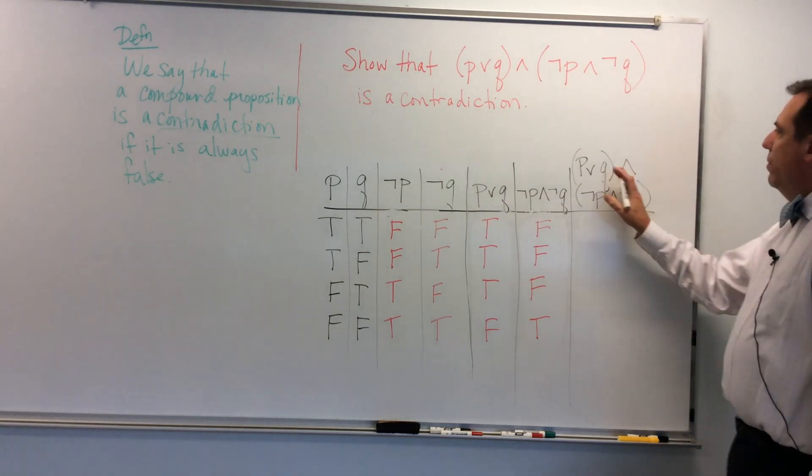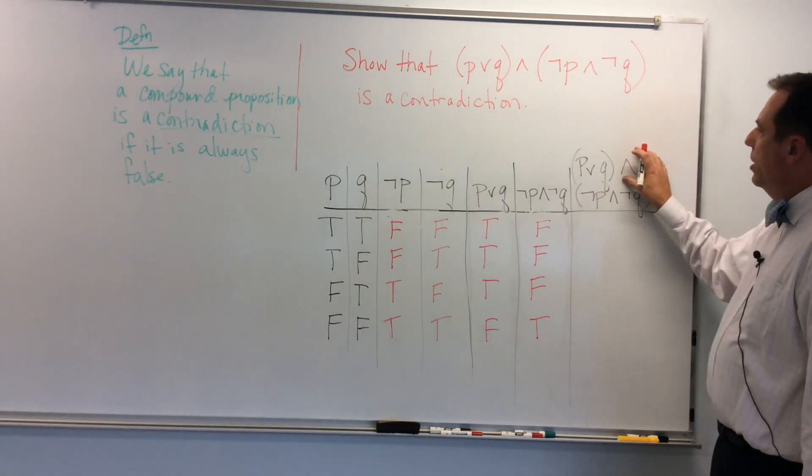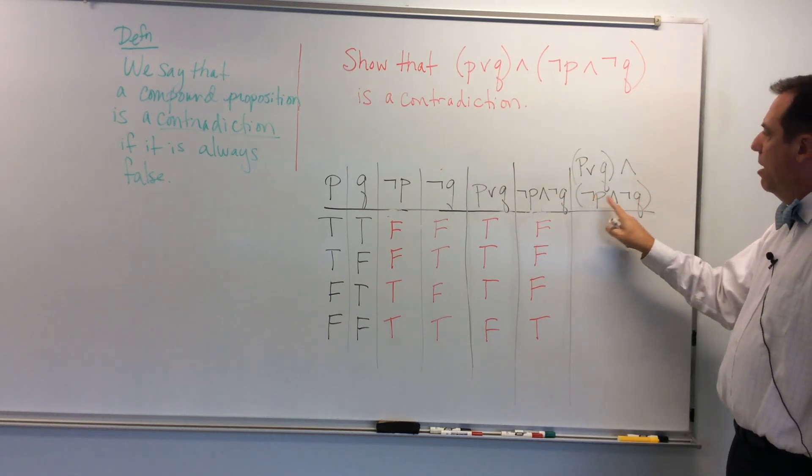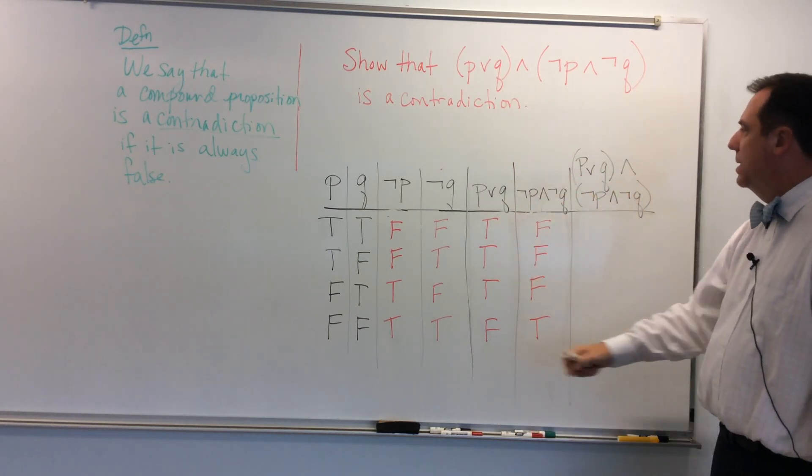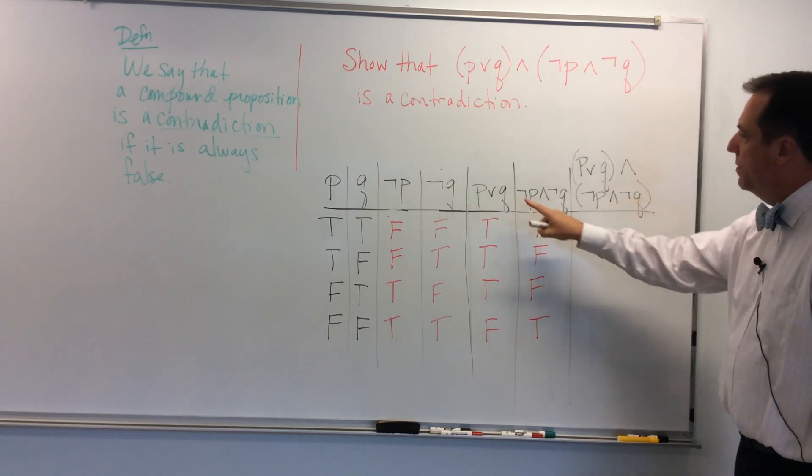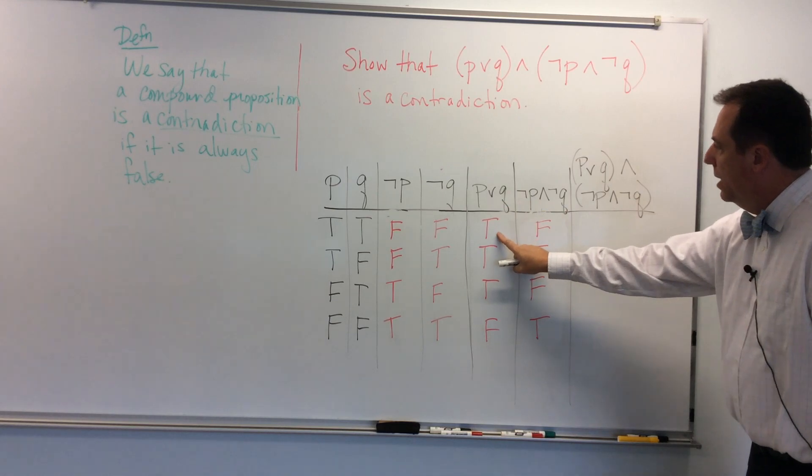Now, what we're going to do is a conjunction with this column, P or Q, and this column, not P and not Q. I have these already worked out for myself. And so I just have to take a conjunction of this and this.